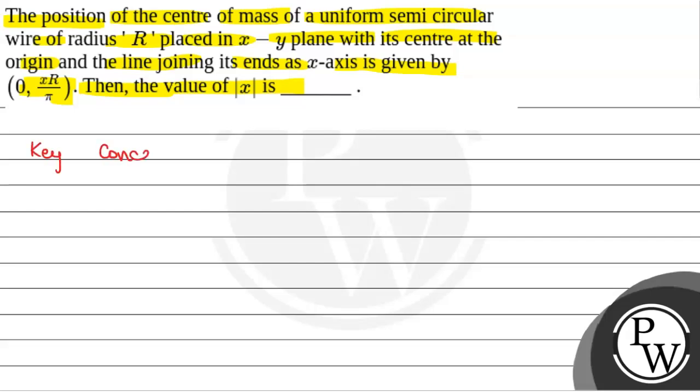The key concept within this question will be center of mass of semicircular ring is at 0, 2r by pi.